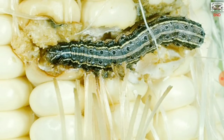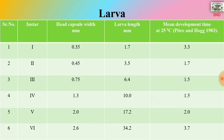You can see larvae damaging maize seeds in the cob. The six larval instars have the following measurements: first instar — head capsule 0.35 mm, larval length 1.7 mm; second instar — head capsule 0.45 mm, length 3.5 mm; third instar — head capsule 0.75 mm, length 6.4 mm; fourth instar — head capsule 1.3 mm, length 10 mm; fifth instar — head capsule 2 mm, length 17.2 mm; sixth instar — head capsule 2.6 mm, length approximately 34.2 mm. The mean development time for each instar at 25°C is also given.